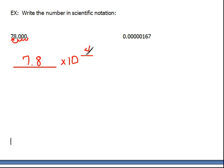Now, the last thing that we need to ask ourselves is, is this a positive 4 or a negative 4? Think about our number, 78,000. We would have to multiply 7.8 by a big number in order to get to 78,000. That's what tells us that this is going to be a positive exponent.